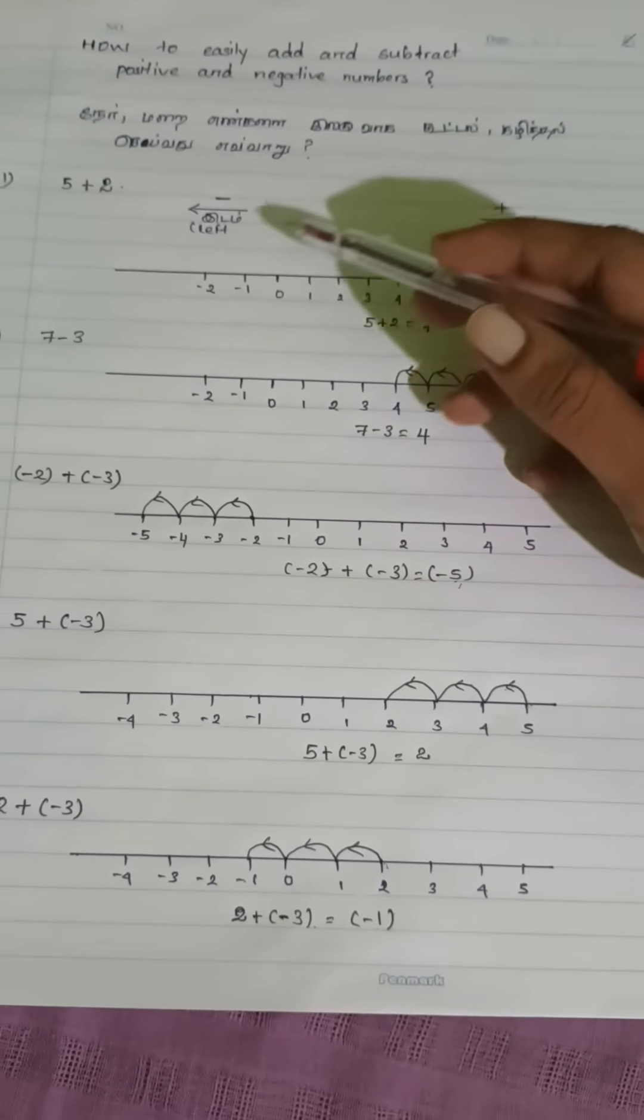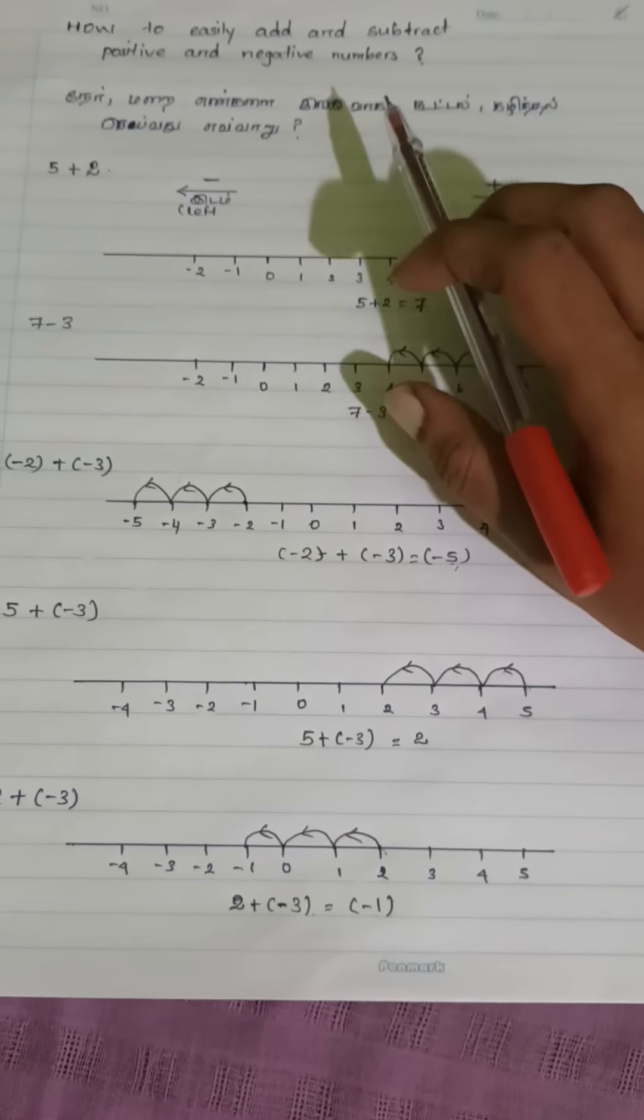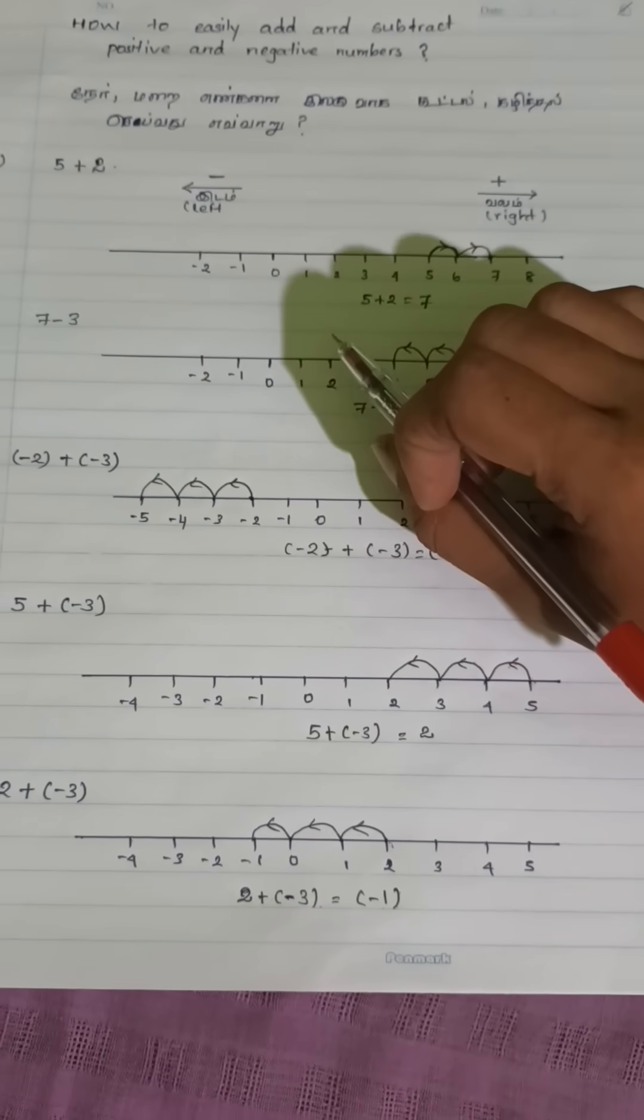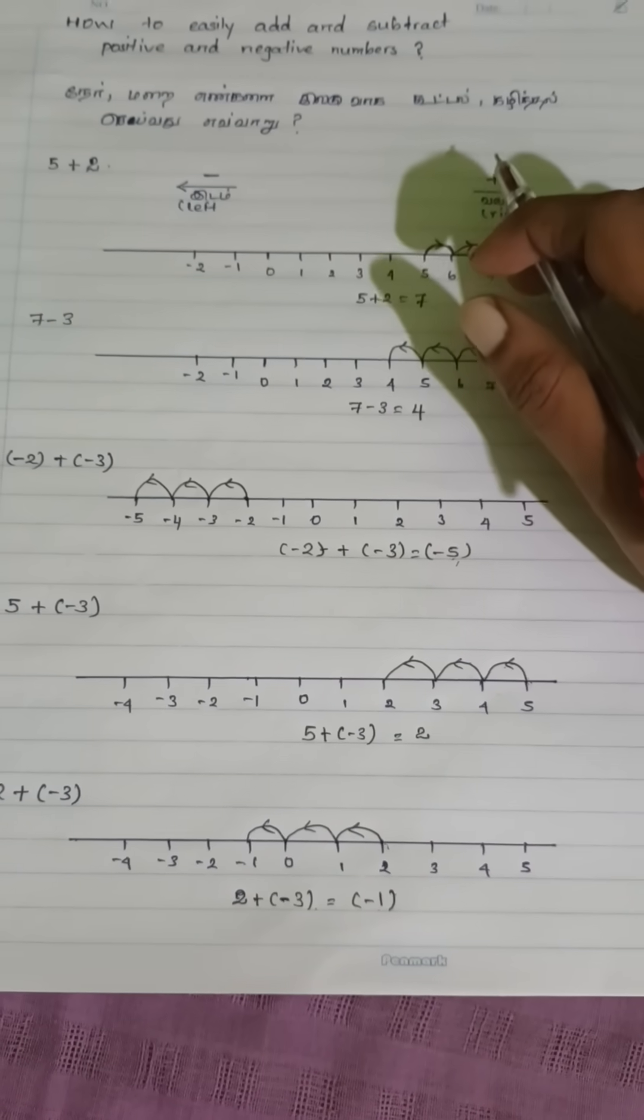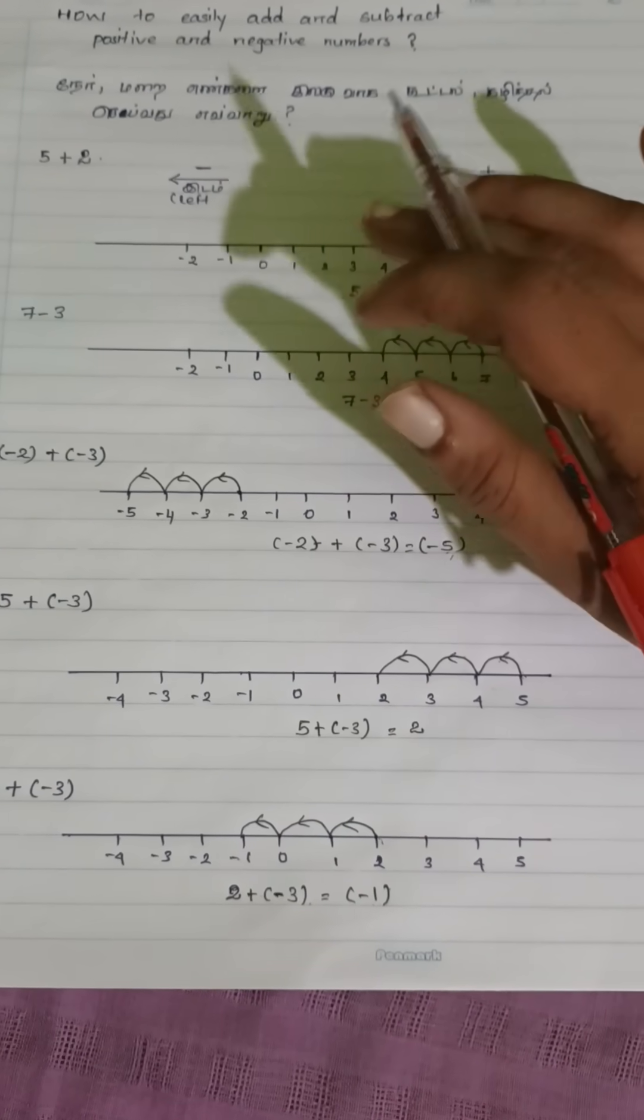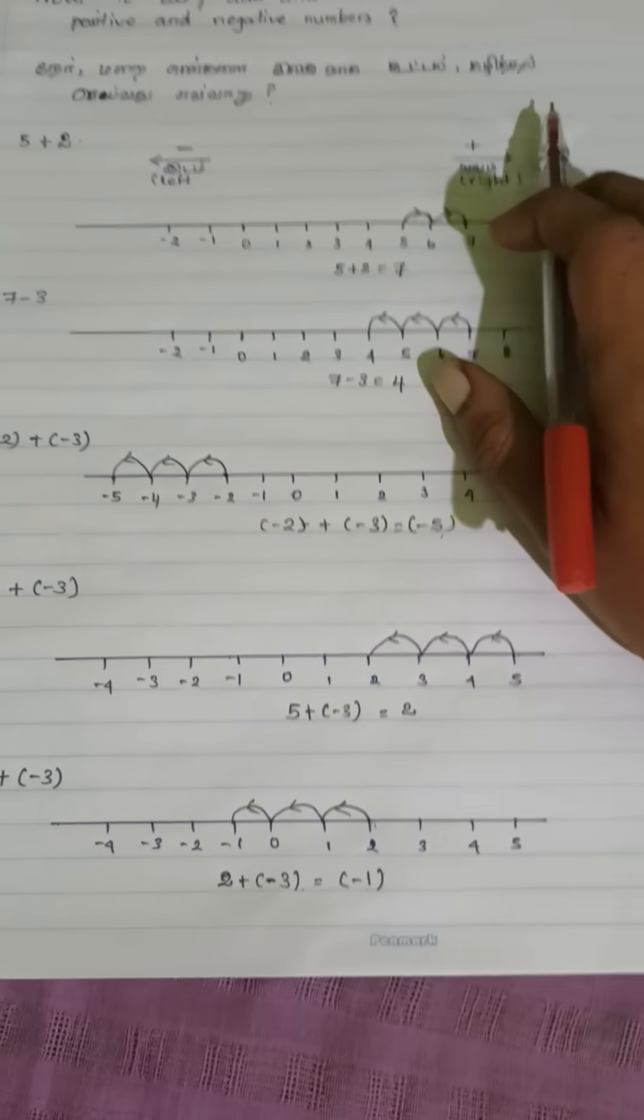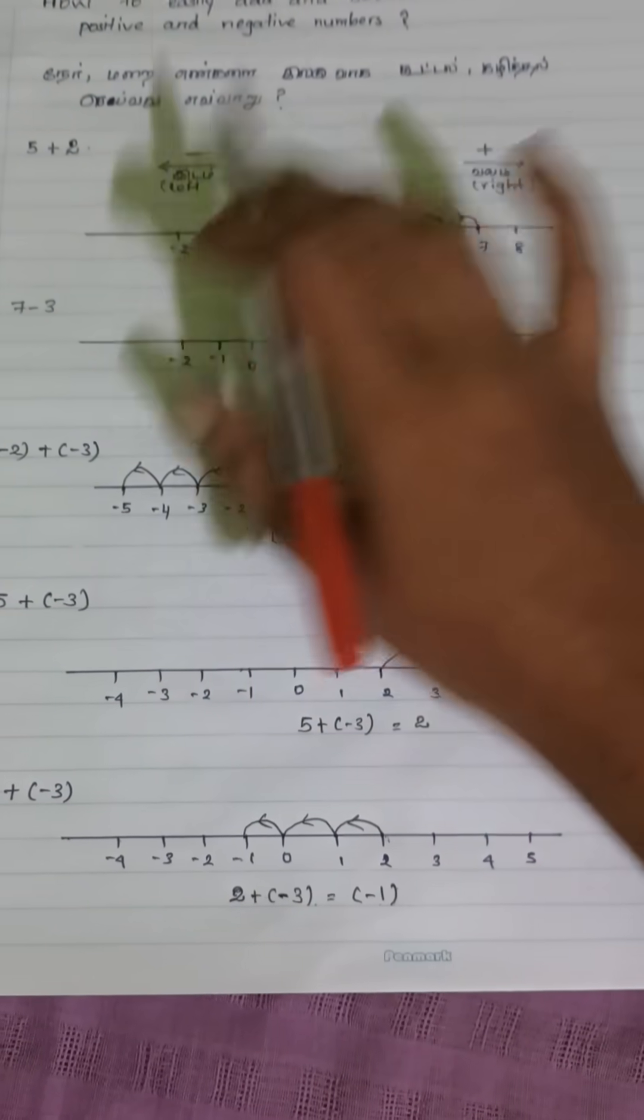Using a number line helps you visualize how to add or subtract both positive and negative numbers. It's easy to understand. Move right side is positive number. Move left side is negative number.